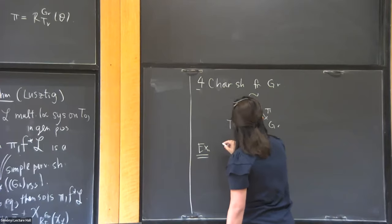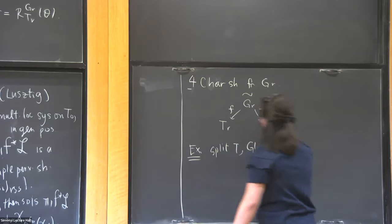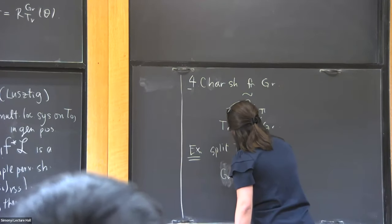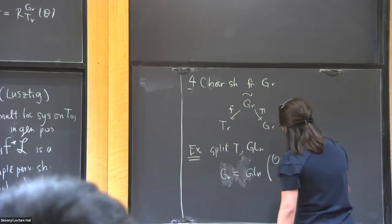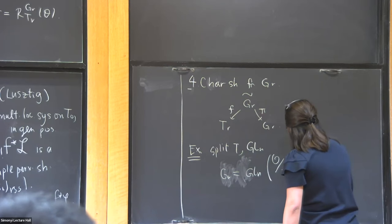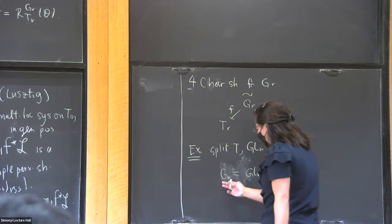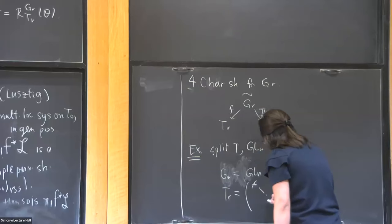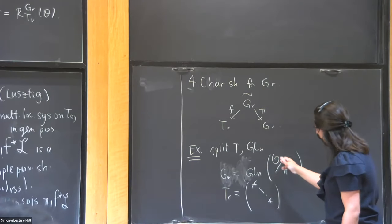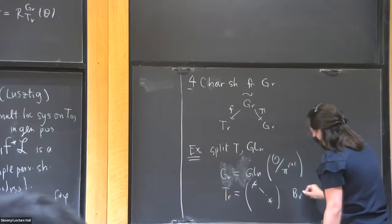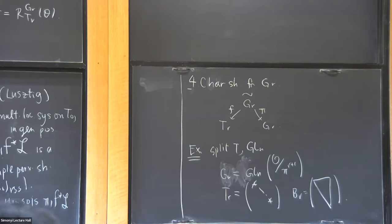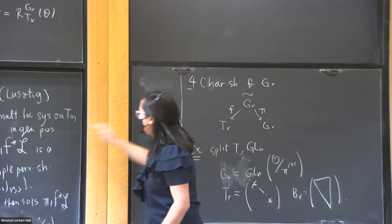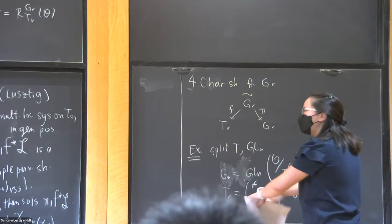Let me take the split case inside GL_N. Then G_R will be GL_N of O mod π^{R+1}. T_R can be taken to be the diagonals inside this, so in each entry you have O^× mod (1 + π^R·O). And B_R is the upper triangular matrices containing this. In this story I'm always working over F̄_q — always working geometrically — so I always have a Borel. How do I recover information for a non-split torus? I can change the rational structure by conjugating by, for instance, a Coxeter element inside the Weyl group.